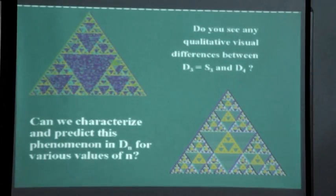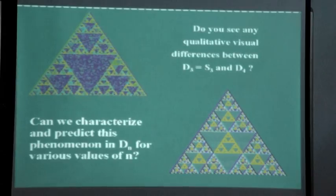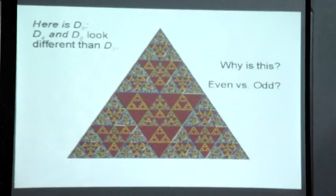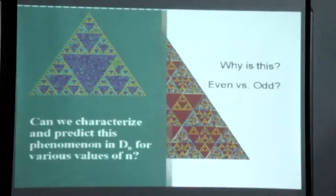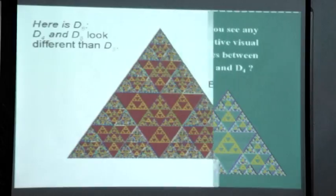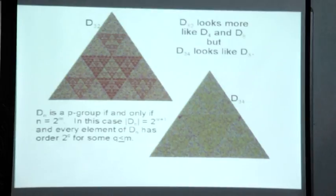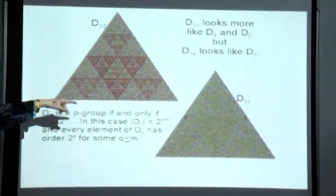Do you see qualitative visual differences between, say, D3 and D4? Much crisper versus chaotic, right? Here's D8 and it looks more like D4, so you might say maybe the odd ones are chaotic and the even ones are nice. But here's D33 and D32 — D32 looks a lot like D4.